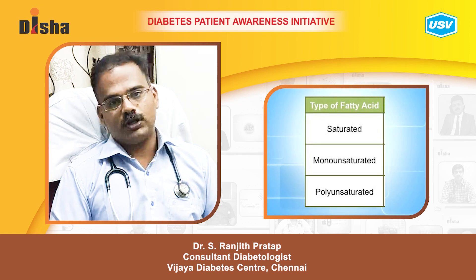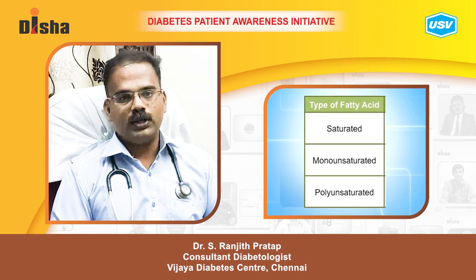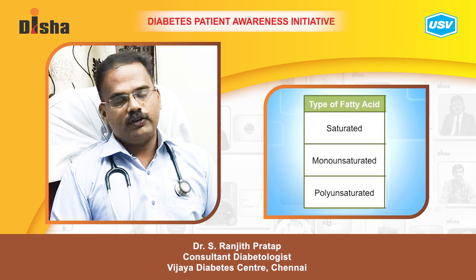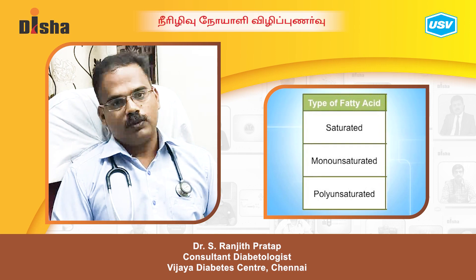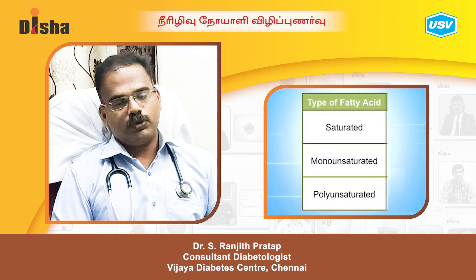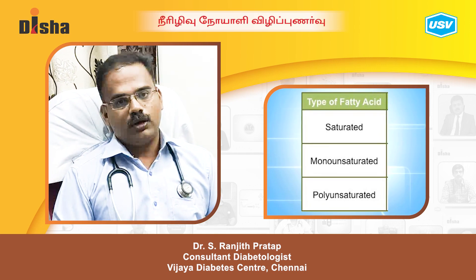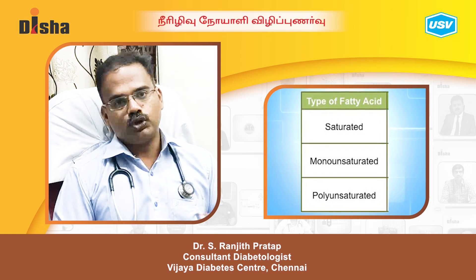We should focus on complex carbohydrates rather than simple ones. Complex carbohydrates include polysaccharides, oligosaccharides, and monosaccharides, with polysaccharides and oligosaccharides being preferable for blood sugar control.